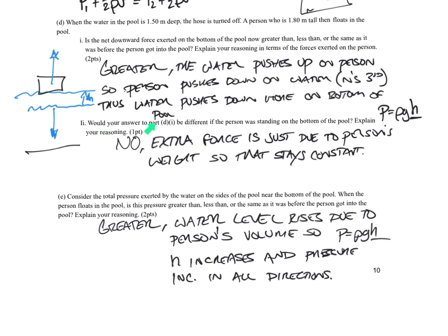So would your answer in part D1 be different if the person was standing at the bottom of the pool? Explain your reasoning. And I said no. Extra force is just due to the person's weight. Because remember, buoyant force, if they're floating, these two forces are going to be equal. So if the person is standing, that weight is also now in contact with the bottom of the pool. So the total force would still be the same.